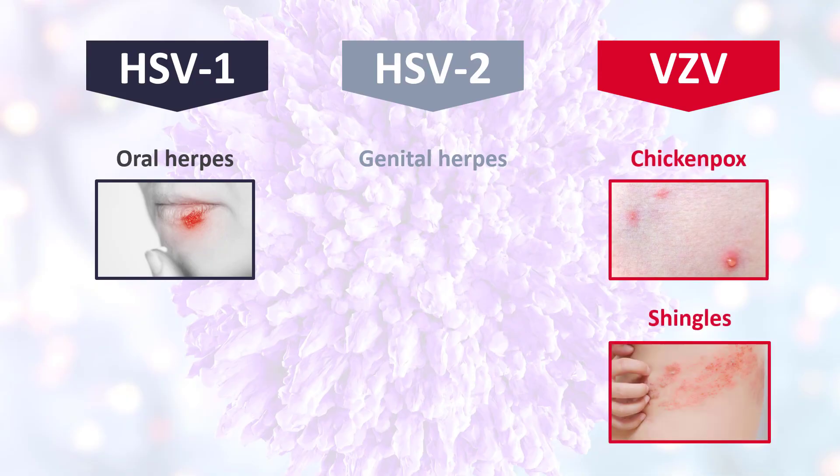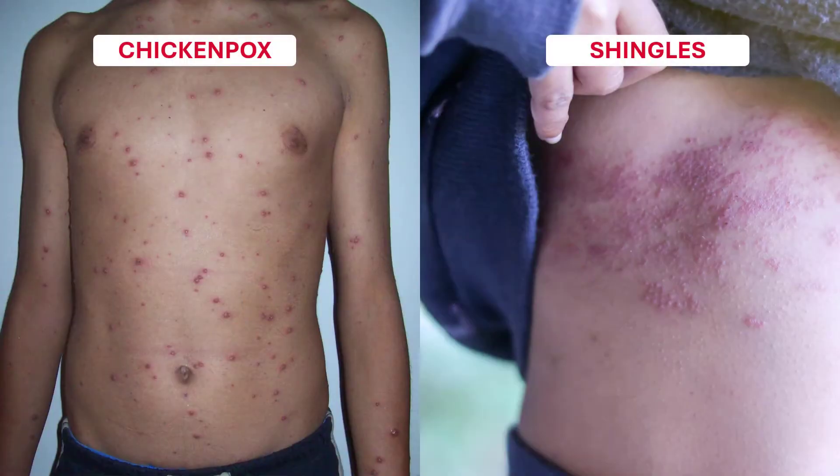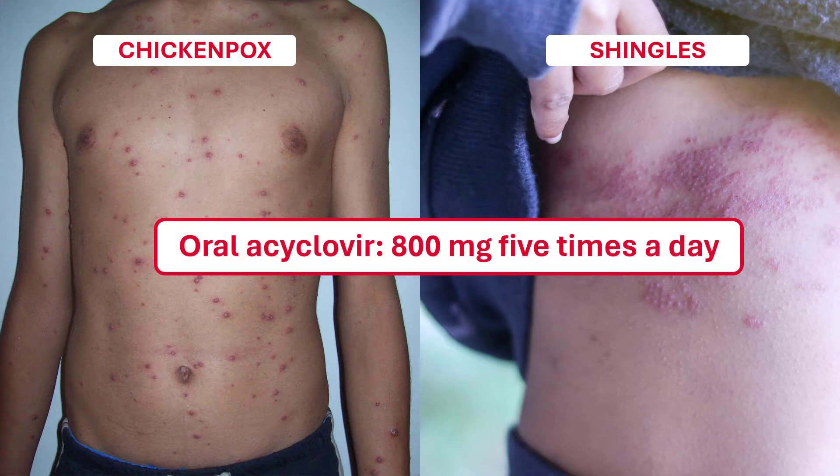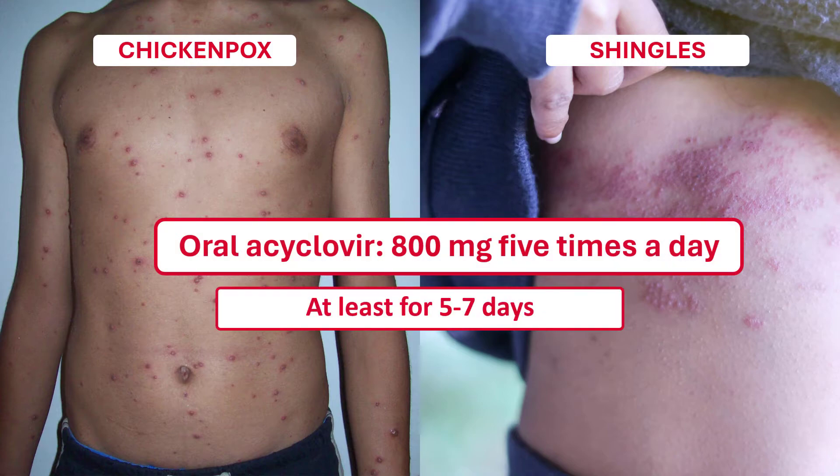This is the dosing regimen most doctors are familiar with, so it becomes easy to neglect the fact that for infections caused by varicella zoster — the cause of shingles and chicken pox — you need to use a much higher dosage. Instead of 400 mg 3 times a day, you need to use 800 mg 5 times a day. Quite a few patients are taken aback when they see this number, thinking the doctor made a mistake — but it's no mistake; this is the right dose for varicella zoster.